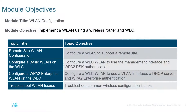We're going to be focusing on configuring our wireless LANs. We have three main types of scenarios: remote site configuration, basic wireless LAN on a wireless LAN controller, and WPA2 Enterprise wireless LAN on a wireless LAN controller. We also have several labs walking us through these, and we'll end with troubleshooting common wireless configuration issues. Let's go ahead and jump right in.